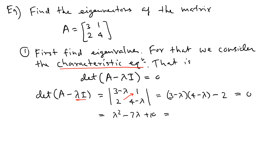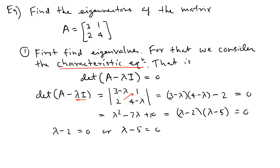We factor this as (lambda minus 2)(lambda minus 5) equals zero. Setting each factor equal to zero gives lambda minus 2 equals zero or lambda minus 5 equals zero, so lambda equals 2 or lambda equals 5. Those are the eigenvalues.